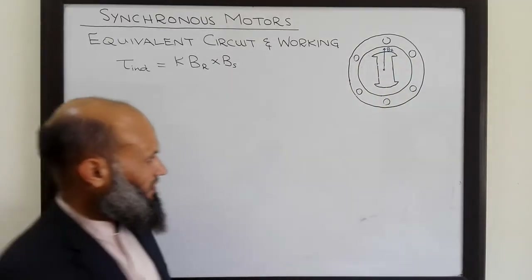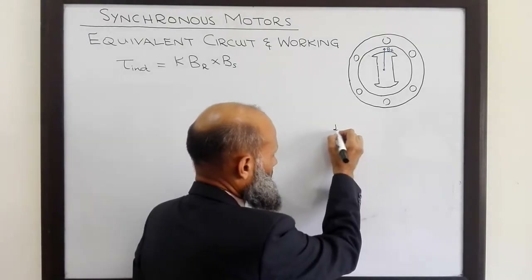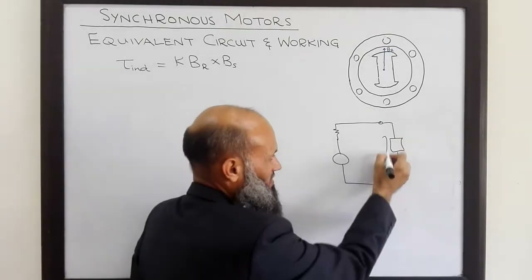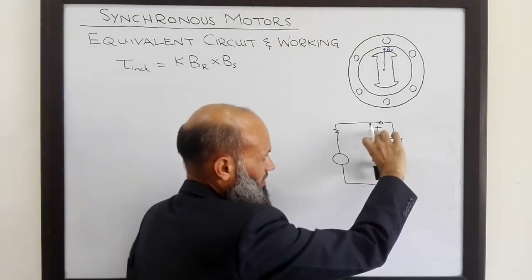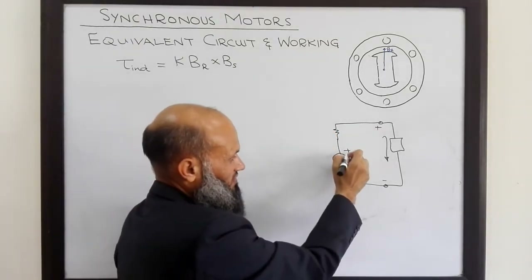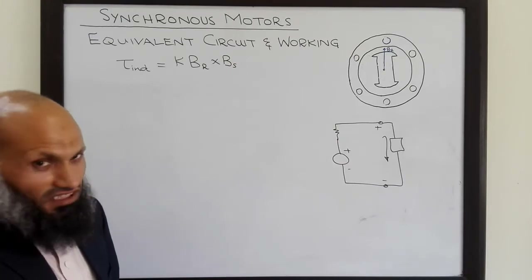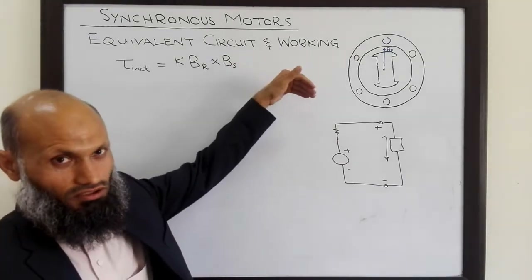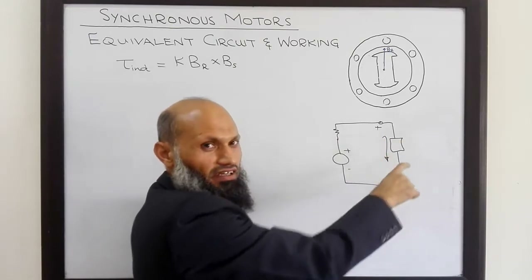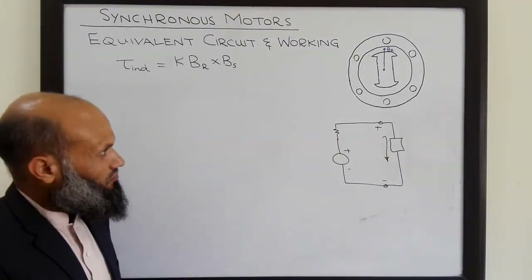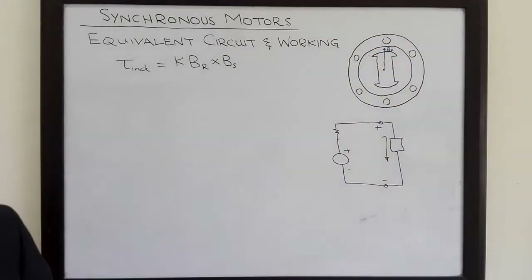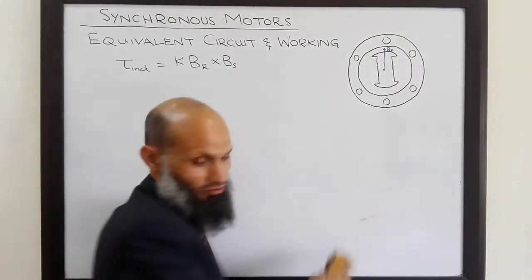What is an infinite bus? You know that when you connect a load to a voltage source, depending upon the current in the load, the voltage available across the load changes, because the voltage source has its own internal resistance. An infinite bus is a voltage source for which the voltage remains constant independent of the load connected to that bus. So let's assume that this machine is working as a generator and the coils are connected to an infinite bus, supplying electrical power to that bus.